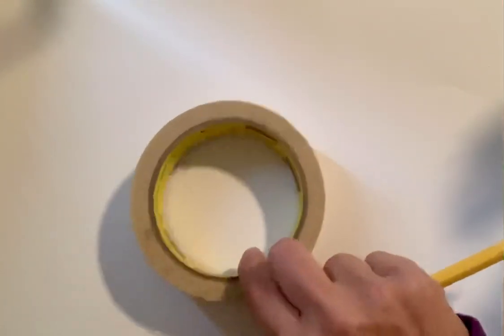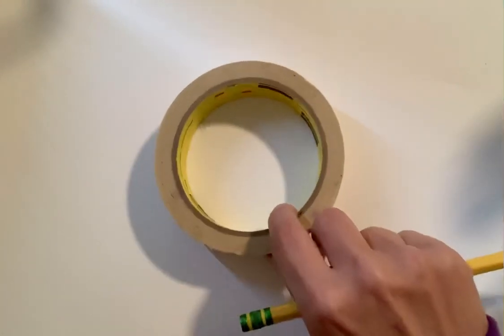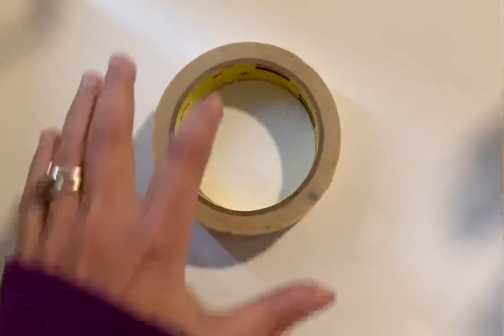The first thing we're going to need in the middle of our paper is a circle. So if you have something circular that you could trace, a cup or something like that, that might be helpful. I have this piece of tape I'm going to use as the center. I'm going to use a pencil and draw my circle in the center, and that's going to be where I build my color wheel.